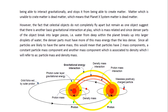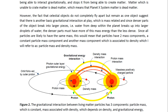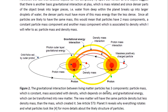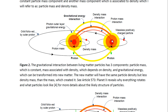However, the fact that celestial objects do not completely fly apart but remain as one object — and these Planet X system celestial objects — suggests that there is another basic gravitational interaction at play, which is mass-related. Since denser parts of the object break into larger pieces, the denser parts must have more of this mass energy than the less dense. Since all particles are likely to have the same mass, this would mean that particles have two mass components: a constant particle mass component, and another mass component associated with density, which I'll refer to as particle mass and density mass. These diagrams, which illustrate how particles are likely to look, come from Article 573.